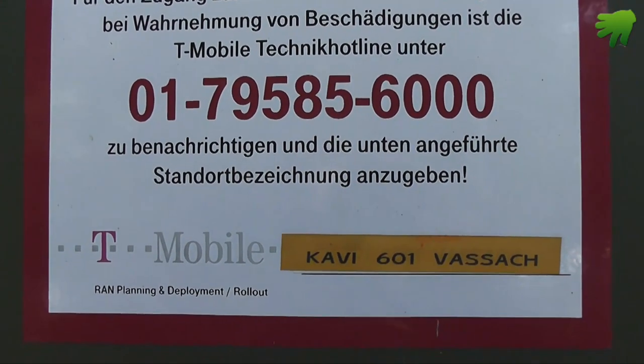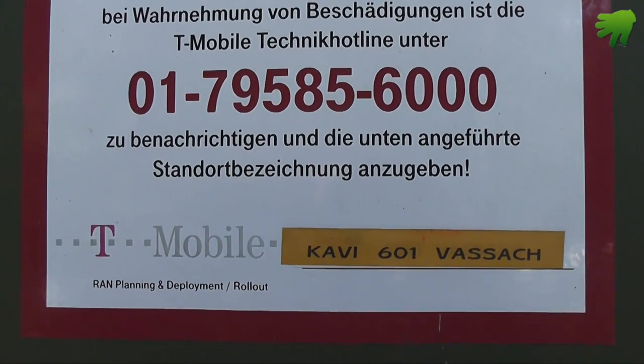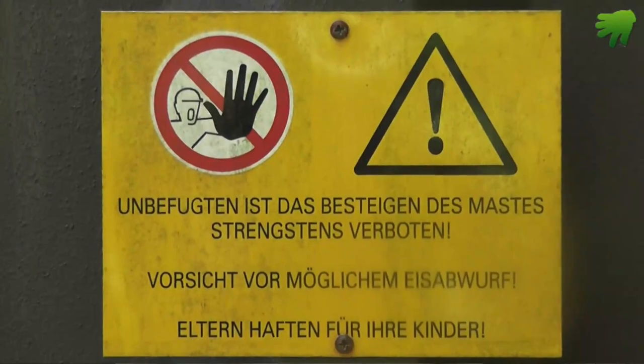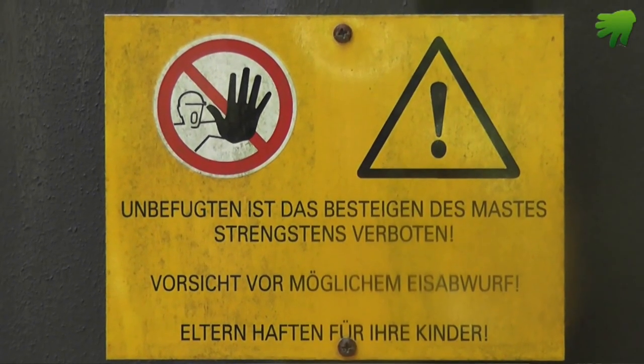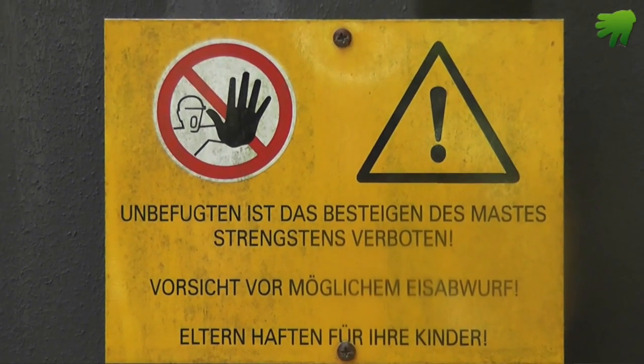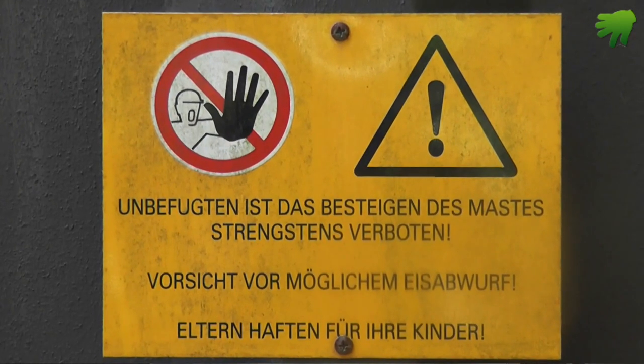Die Hauptkeulen treffen erst in einer Entfernung von 500 Metern am Boden auf, und dort kommt es zu einem sehr starken Baumsterben, weil sich die Hauptkeule über einen größeren Bereich erstreckt. Zuerst sind es ein paar Bäume, dann geht das Baumsterben weiter, bis der Wald dort, wo die Hauptkeule auftrifft, abstirbt.